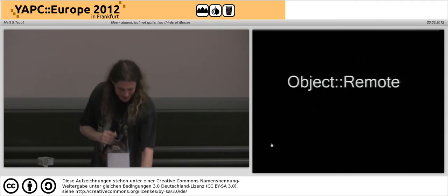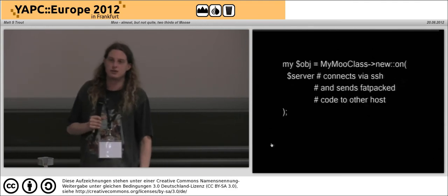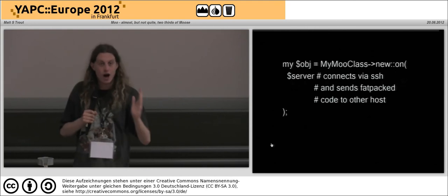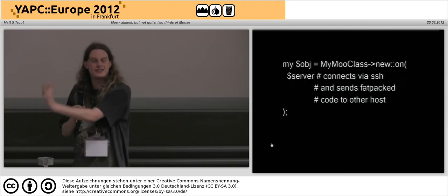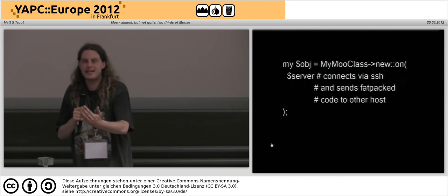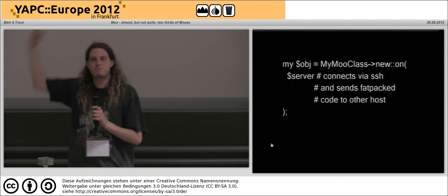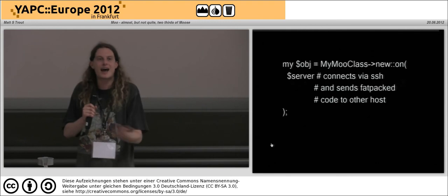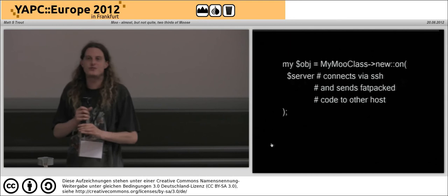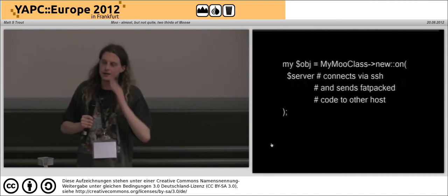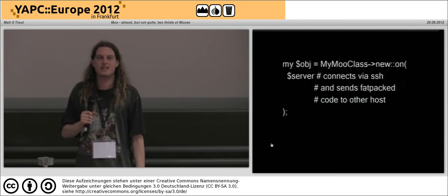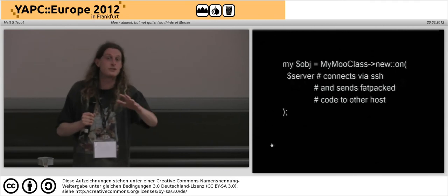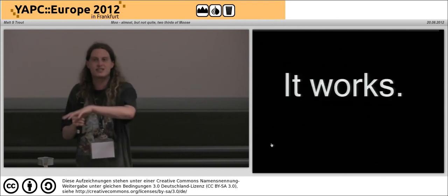It enables deployment via FTP — I refer you to my previous comments on the subject. One of the fun things you can do as a result is Object::Remote, where I can take a class, call new_on with a hostname, and Object::Remote SSHes into that host, squirts a copy of itself over the wire by fat-packing itself on the fly, instantiates the object in the process on the far side, and gives me back a handle to it. Because I've got a pure Perl dep chain, this is completely transparent — the only thing I'm relying on at the other end is a reasonable 5.8+ Perl interpreter. I'm fairly sure my talk tomorrow is about the system I built using this.